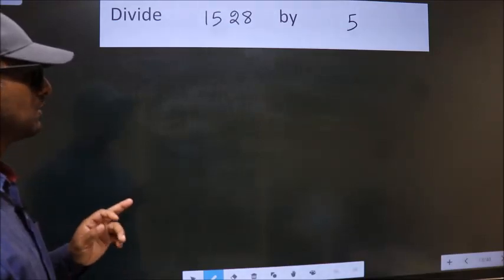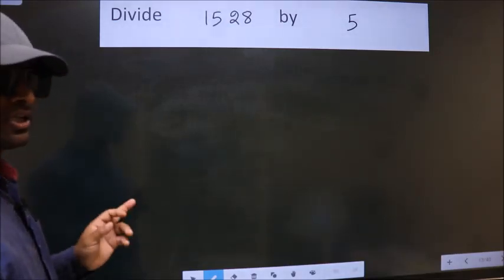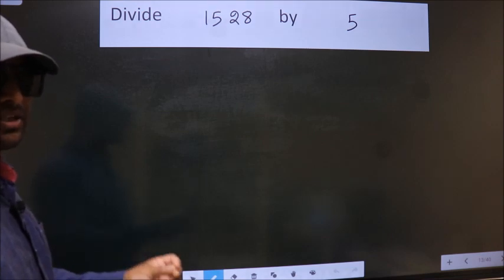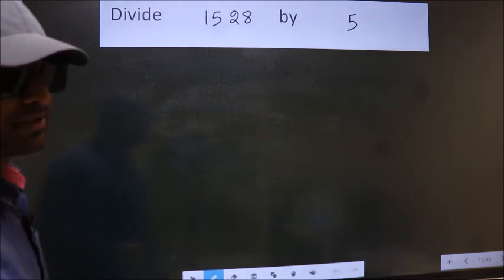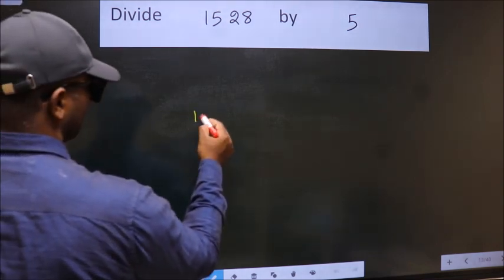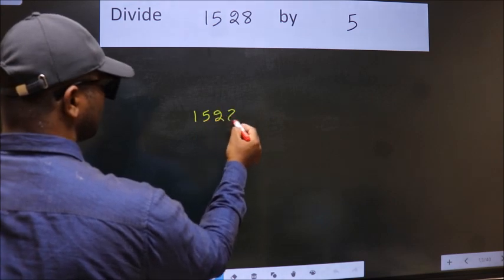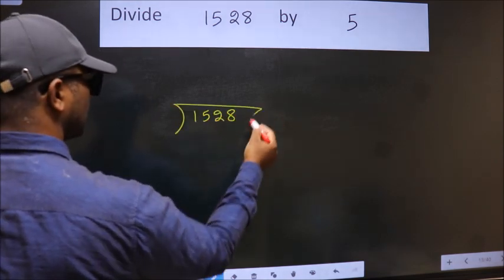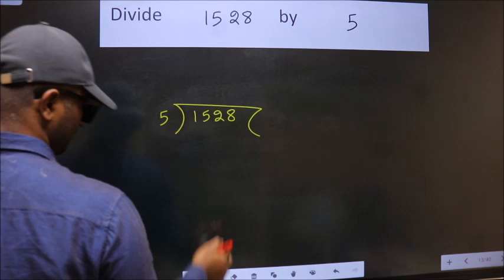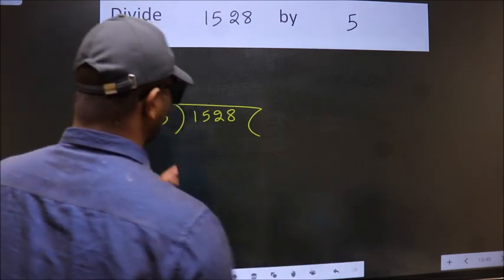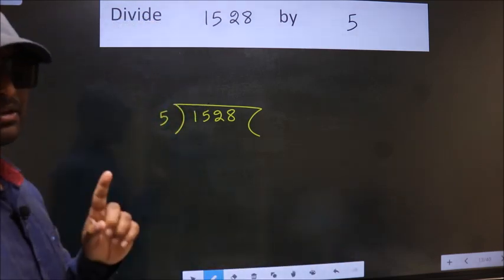Divide 1528 by 5. To do this division, we should frame it in this way: 1528 here, 5 here.